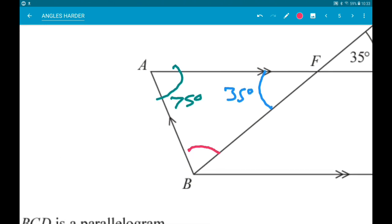So 75 add 35 is 110 degrees. Angles in a triangle add up to 180. So 180 minus 110 does indeed equal 70 degrees.